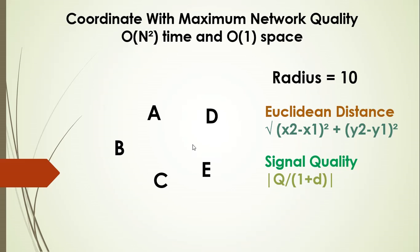Let's look at how we approach this problem. We take every tower position as a candidate best point. From that point, we calculate the distance to all other towers and compute the quality sum. This gives us a network quality value for each tower position. For the first tower A, you treat it as the best point, calculate the distance from it to all other towers, sum the quality values, and get a quality parameter Q1.